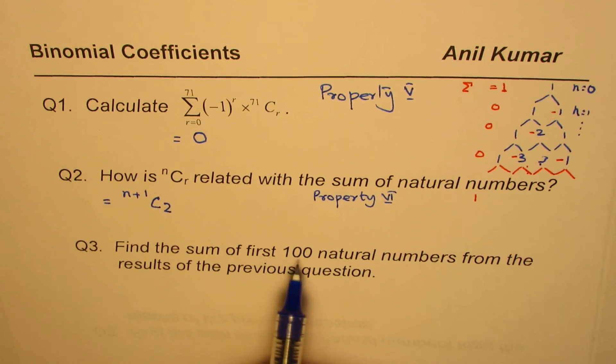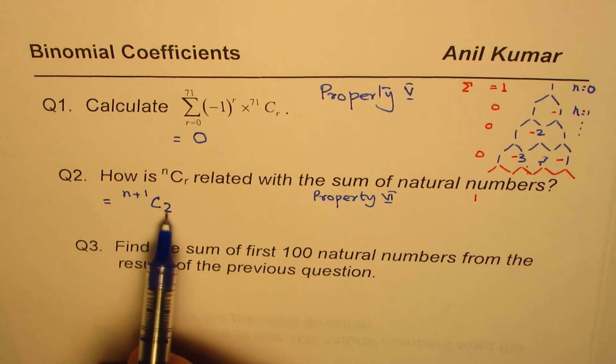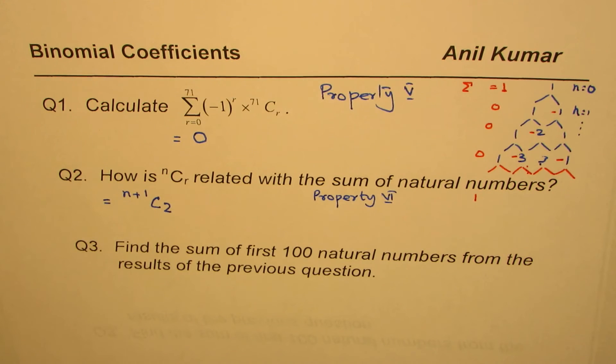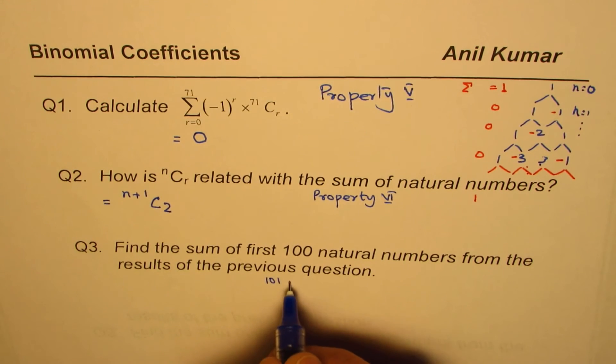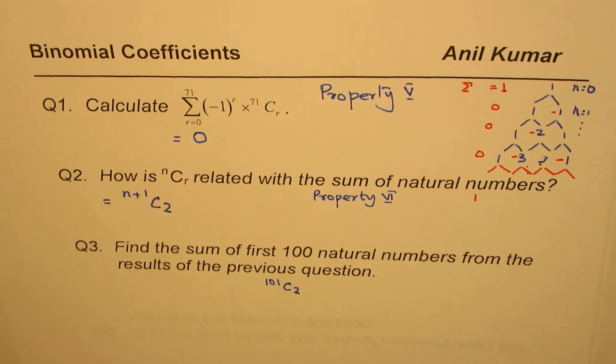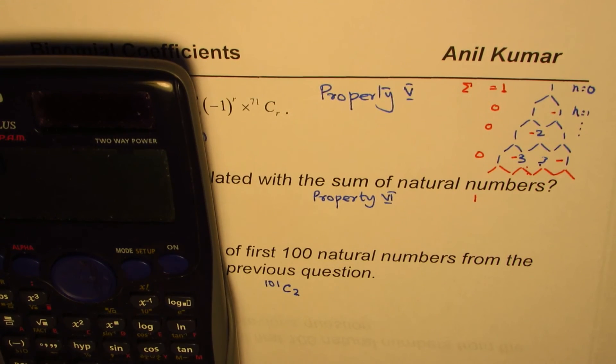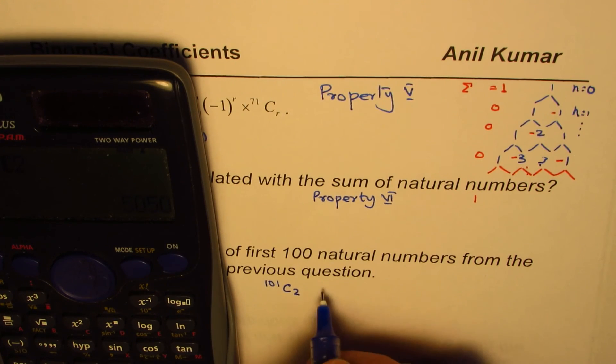Find the sum of first 100 natural numbers from the results of previous question. We know the formula here is n plus 1C2. n is equal to 100. So first 100 numbers. So we'll have n plus 1, which is 100 plus 1.